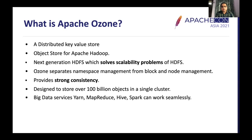Ozone gives a strong consistency model unlike other object stores in the ecosystem today. Since it exists in the same ecosystem as HDFS, all big data frameworks like YARN, MapReduce, Spark, and others can work over Ozone seamlessly.